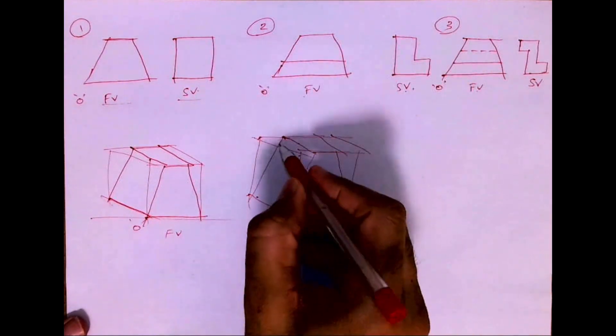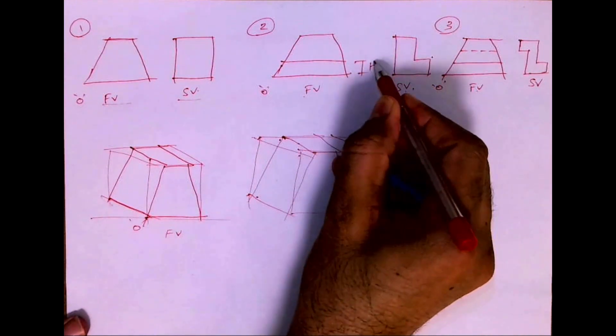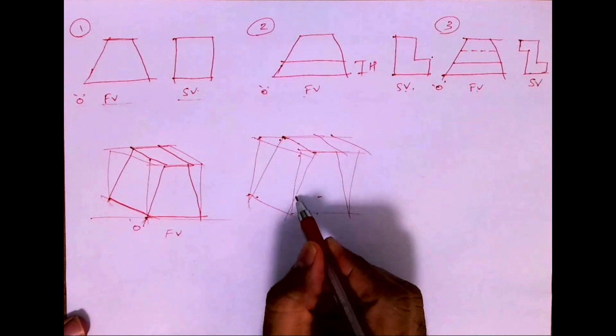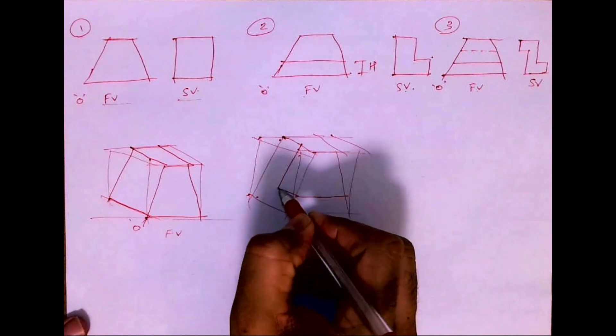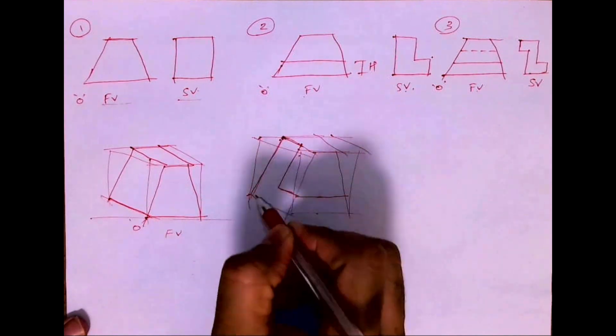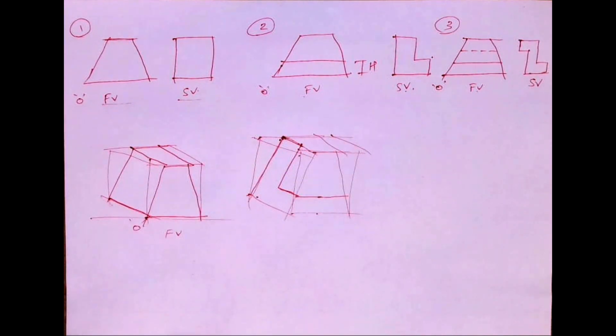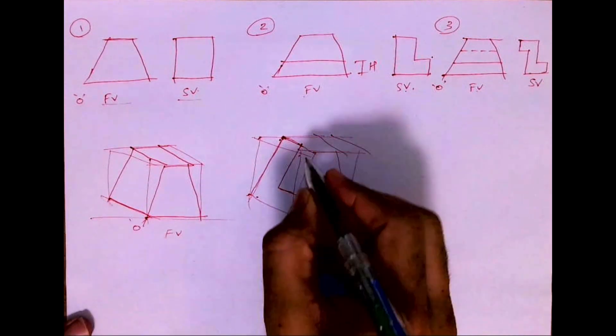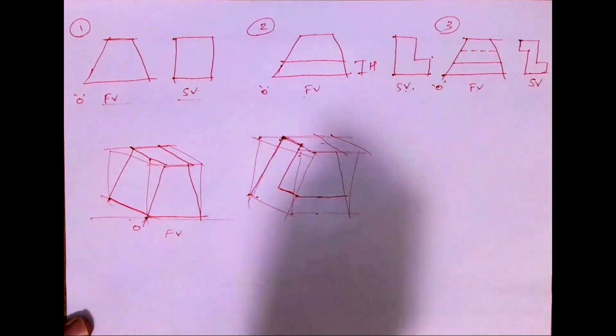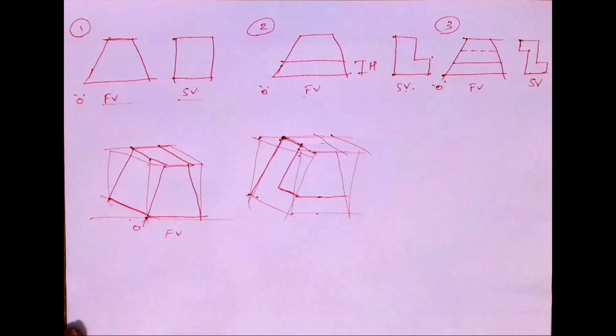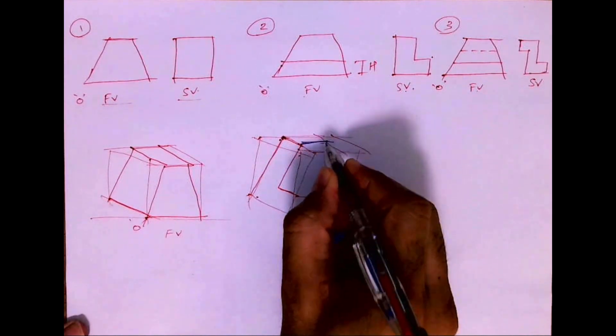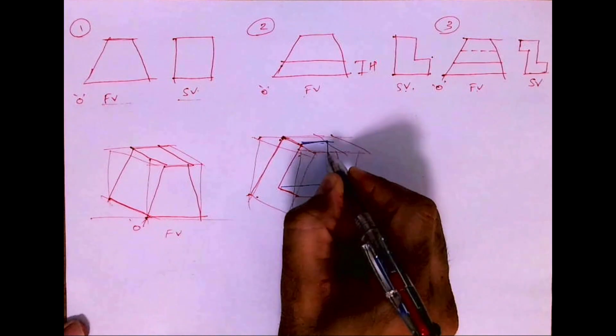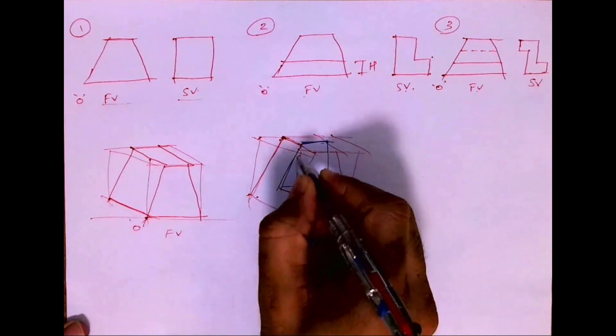Then, see this height. I'll take that height, draw a horizontal line. Wherever it cuts, from there I'll go behind. Here also I'll go behind, and I will draw this L shape. This line will be dark. You extend from here, and you will get this. This is how it will look.